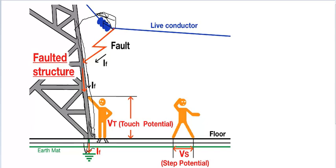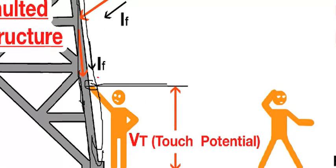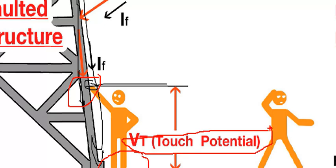A human, if you look at the scenario, will touch the fault area. The fault area is energized. If you look at the fault area, the fault point is the highest peak voltage point. If you look at the ground point, the potential difference between that point and the ground is the touch potential.